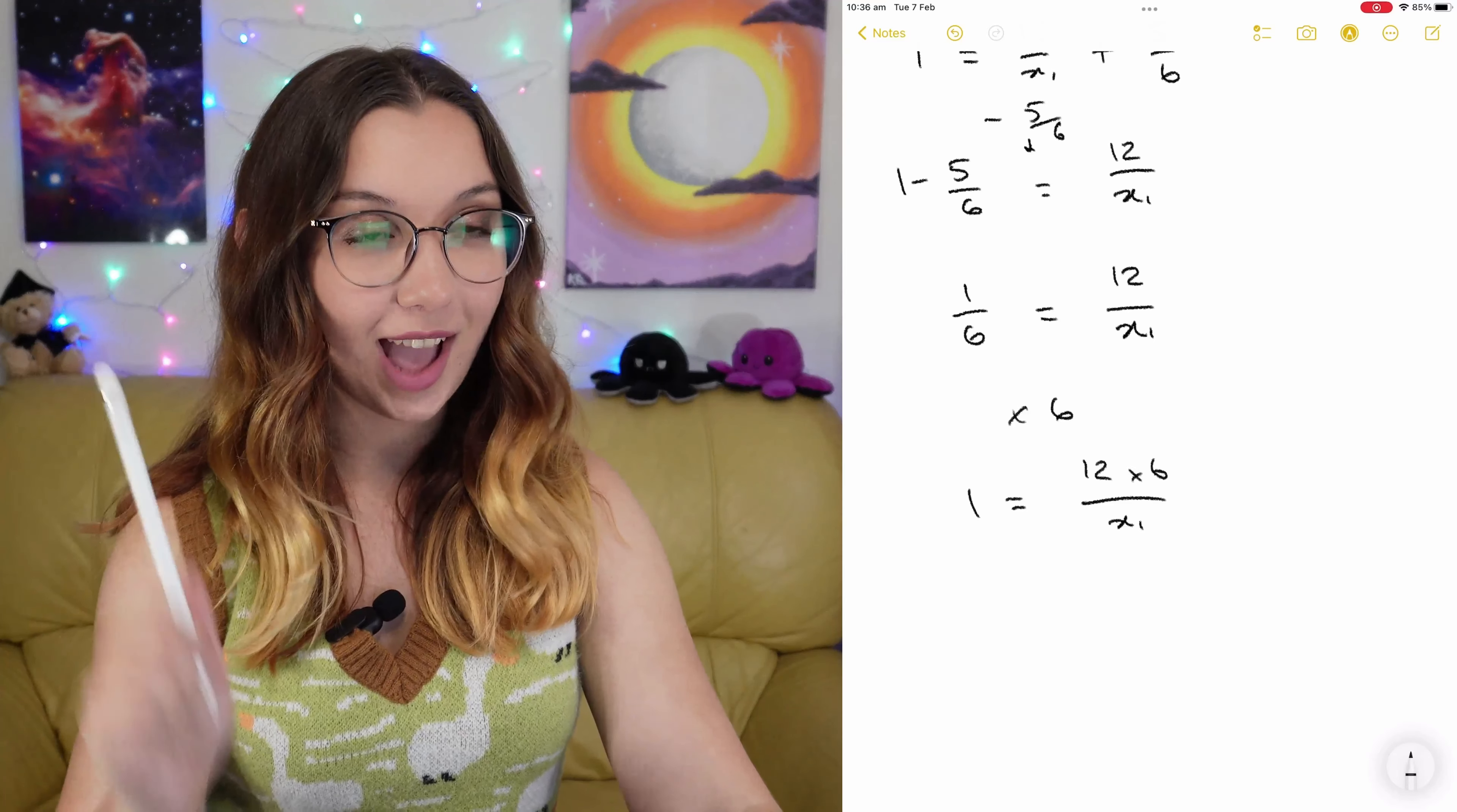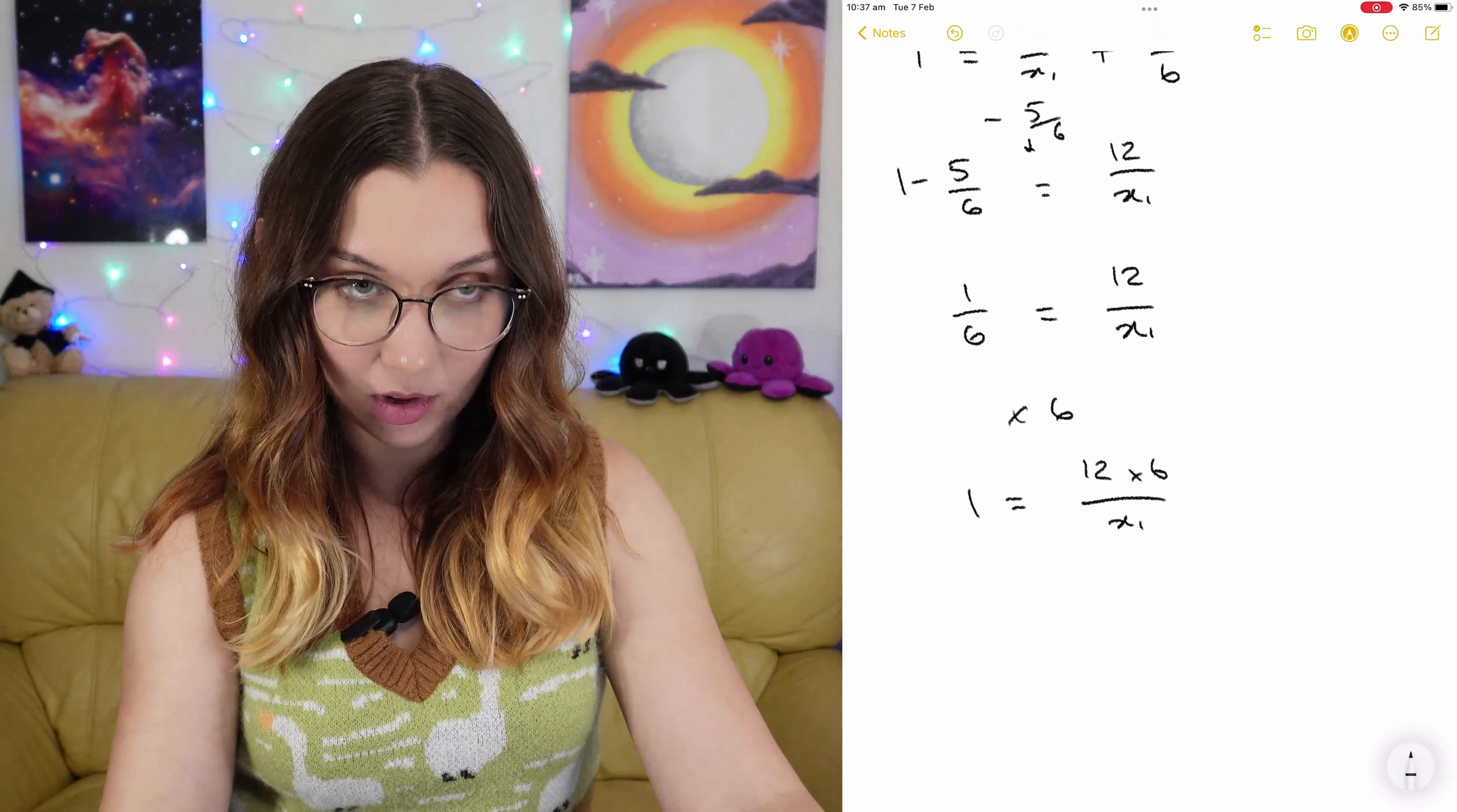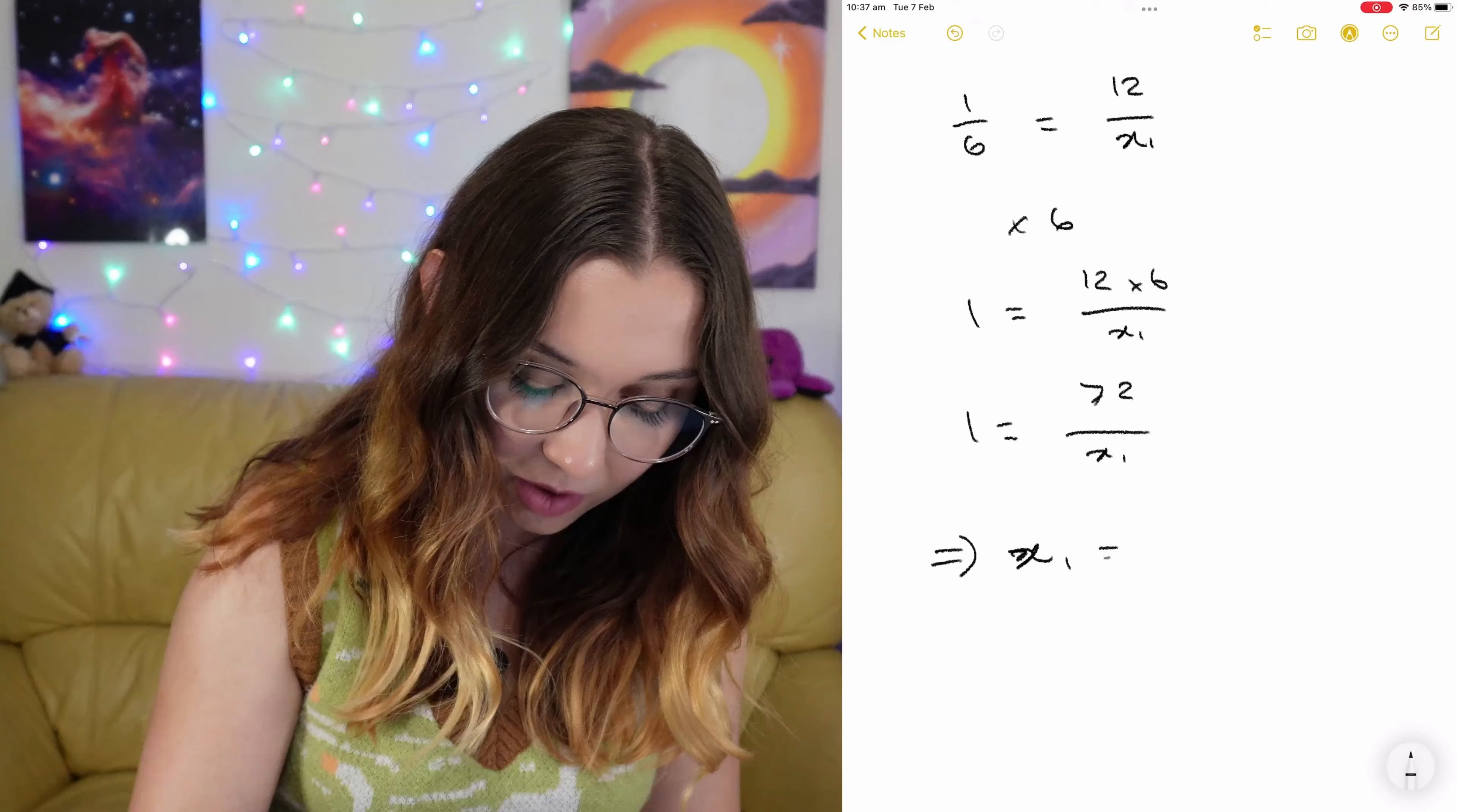If I multiply both sides by 6, I get 1 is equal to 12 times 6 on x1. When I was younger, I had my times tables in every room of the house. 12 times 2 is 24 multiplied by 3. 72. Let's use the calculator. It is 72. I still got it.